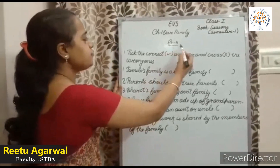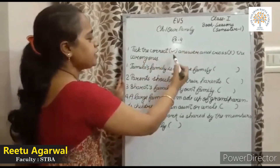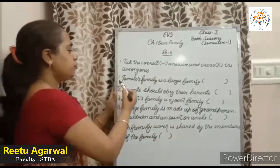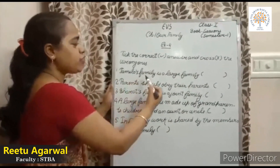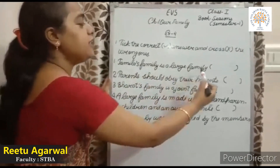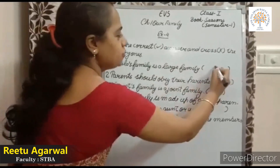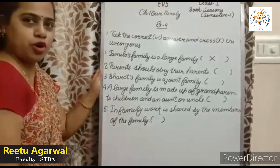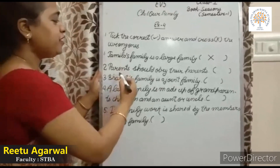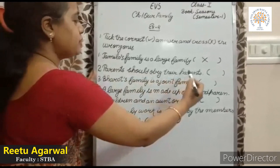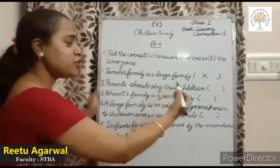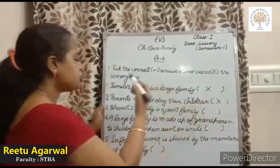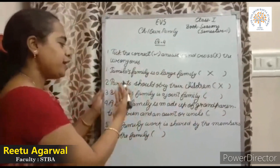Exercise 4: tick the correct answer and cross the wrong one. First: Jamila's family is a large family — wrong! Because Jamila's family is a small family. Parents should obey their children — this one is also wrong, because children should obey their parents.